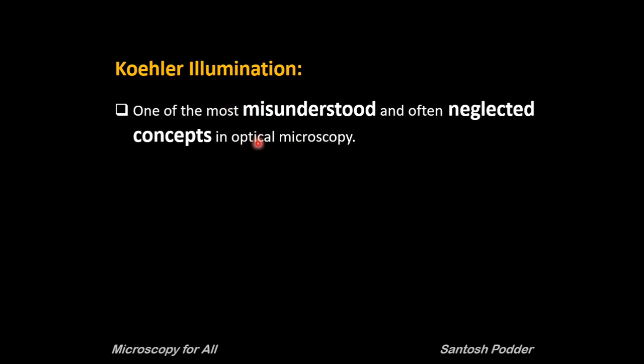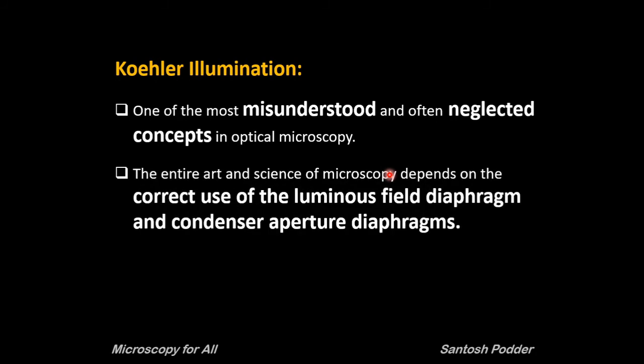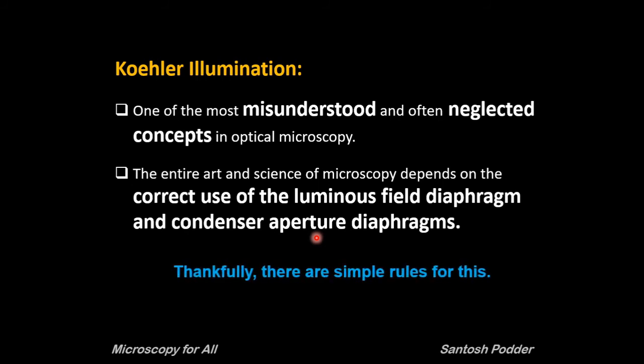Do you know that Köhler illumination is one of the most misunderstood and often neglected concepts in optical microscopy? It is no exaggeration to say that almost the entire art and science of microscopy depends on the correct use of the luminous field diaphragm and the condenser aperture diaphragm. The most critical parameter that must be fulfilled to achieve optimum performance of your microscope is the proper configuration with regard to illumination — and thankfully there are simple rules for this.